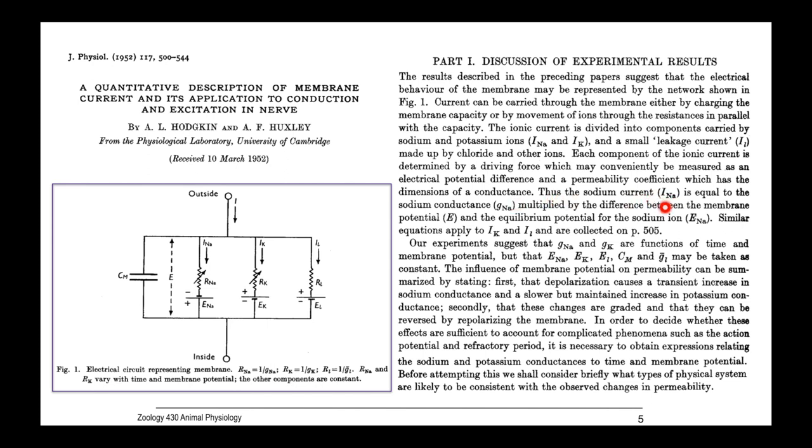Thus, the sodium current, INA, is equal to the sodium conductance, GNA, multiplied by the difference between the membrane potential, E, and the equilibrium potential for the sodium ion, ENA. Similar equations apply to potassium and the leak.